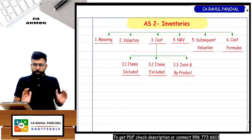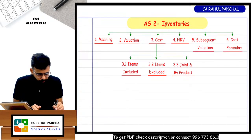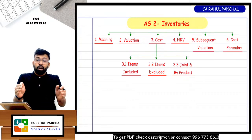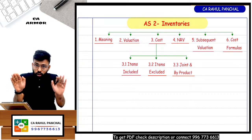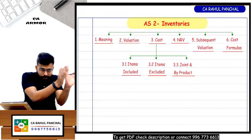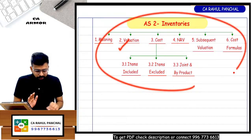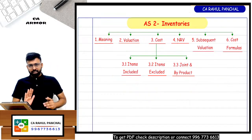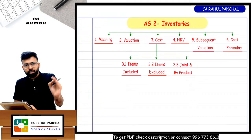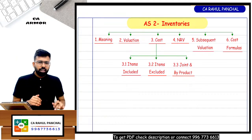I always have this habit to make a mind map. If I talk about inventory, there are six parts: meaning, valuation, cost, NRV, subsequent valuation, and cost formulas. Let us start with the meaning of inventory.